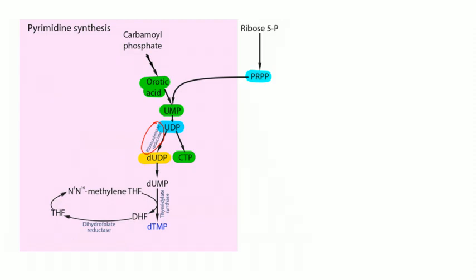Ribonucleotide reductase converts UDP to deoxy-UDP. Remove a phosphate and it becomes deoxy-UMP. Then thymidylate synthase converts deoxy-UMP to deoxy-TMP, using tetrahydrofolate as a carbon donor. That leaves dihydrofolate, and to regenerate tetrahydrofolate you need the enzyme dihydrofolate reductase.